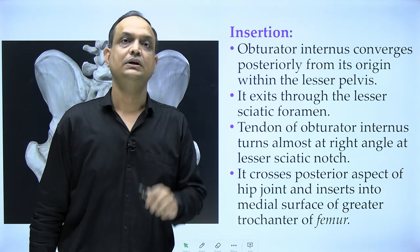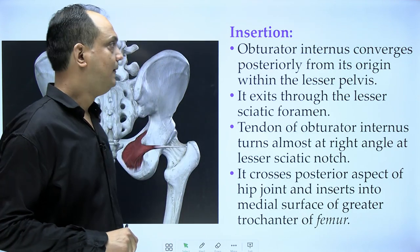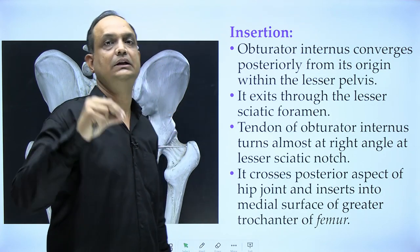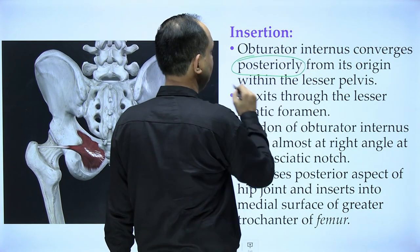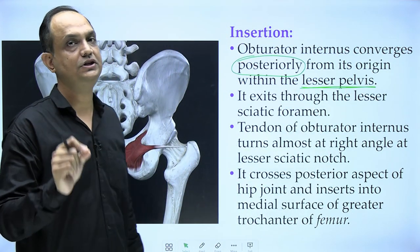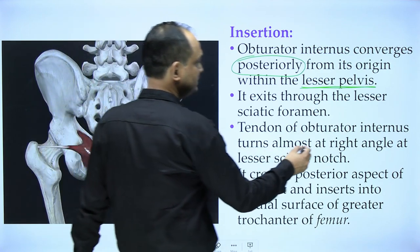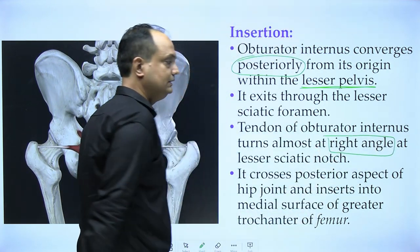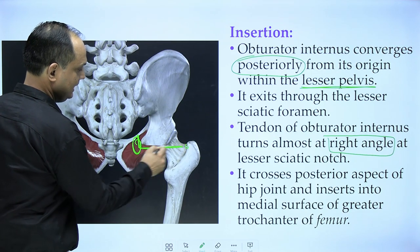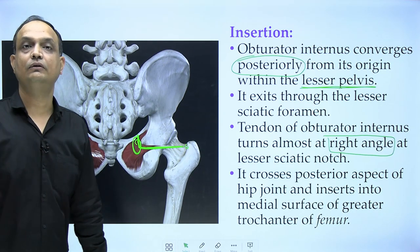The insertion is more important in relation to this muscle than its origin. The obturator internus has a fan-shaped origin that converges into a very thin tendon. Posteriorly, the muscle forms a tendon that leaves the lesser pelvis through the lesser sciatic foramen. The tendon then turns almost at a right angle at the lesser sciatic notch, passing through a groove just below the ischial spine.